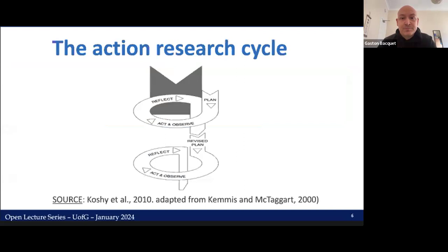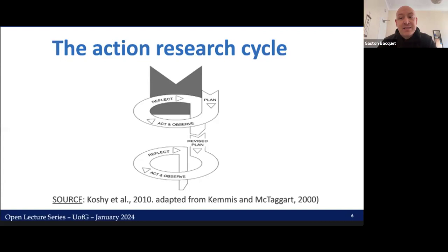When trying to visualize what action research might look like, this illustration by Cauchy can be helpful. It shows the key aspects of action research, particularly its iterative nature. There is a cycle of planning, acting, and observing, which is followed by a revised plan, and then off we go again. For instance, a teacher-researcher might design specific strategies, try them out in class, take note of what happens, reflect on possible changes, refine the strategies, and try them out again — thus we have the cycle in action.